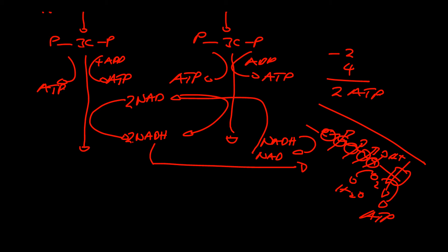The end product we've made is two three-carbon pyruvates. These pyruvates then go into the matrix of the mitochondria, where they go through the link reaction and Krebs cycle.